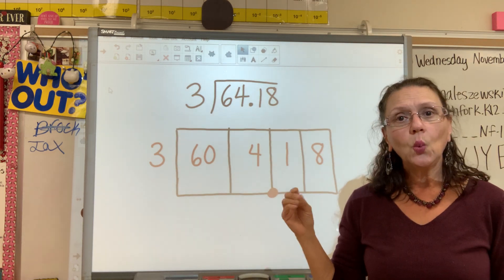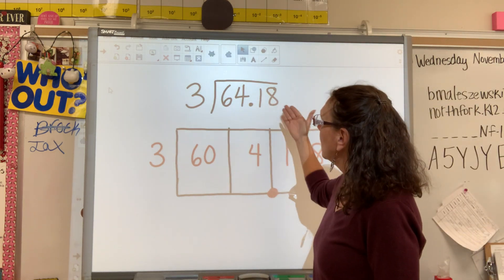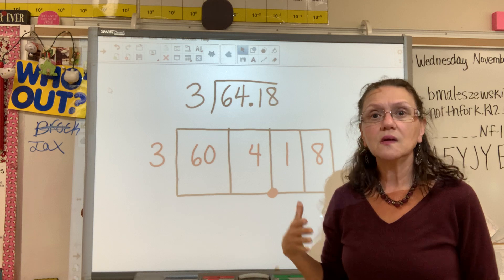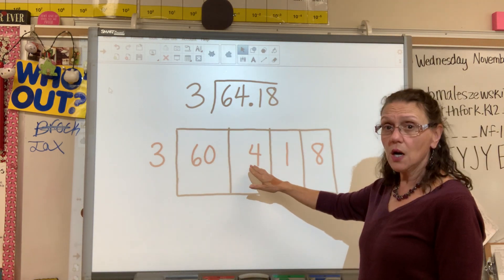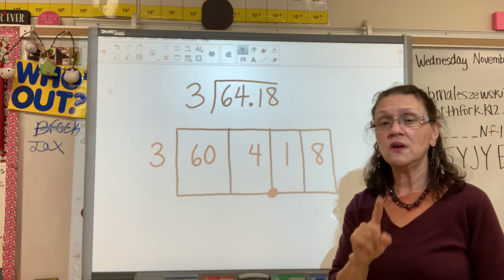Again, we place our dividend in the boxes split up by place value. So I have a 60 and a four. And here's one important difference.